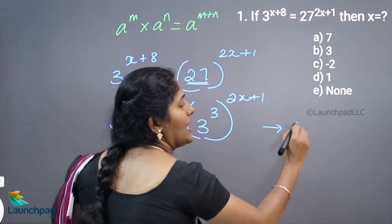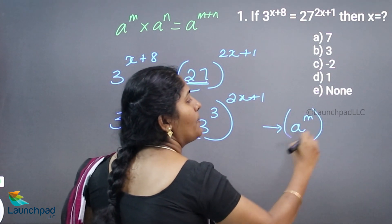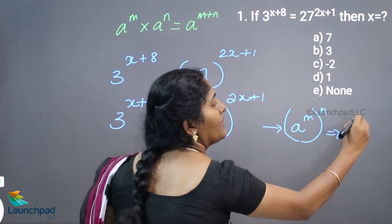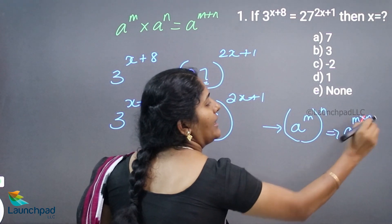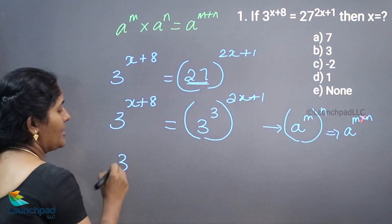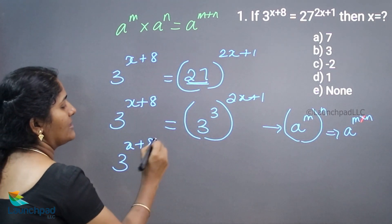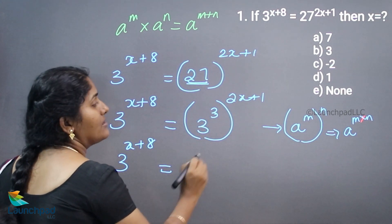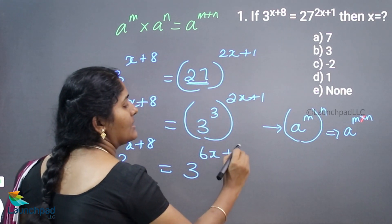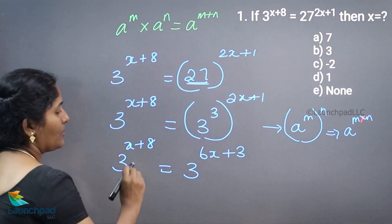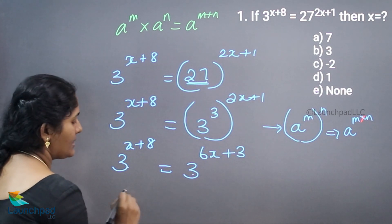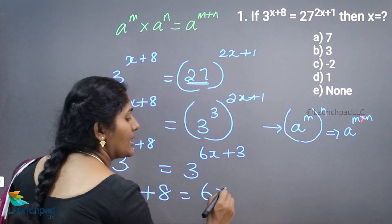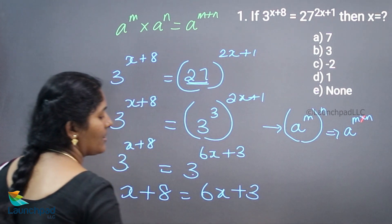Now, a power m the whole power n means I can consider a to the power m into n. Similarly, 3 to the power of x plus 8 is equal to 3 to the power of 6x plus 3. Now the base values are same.